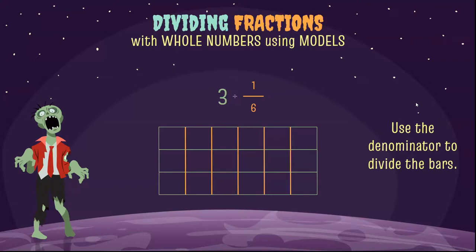So each bar has six pieces, six chunks, six sections. Now we're going to count the sections by the numerator. Since my numerator is one, I'm going to number off each section by ones.